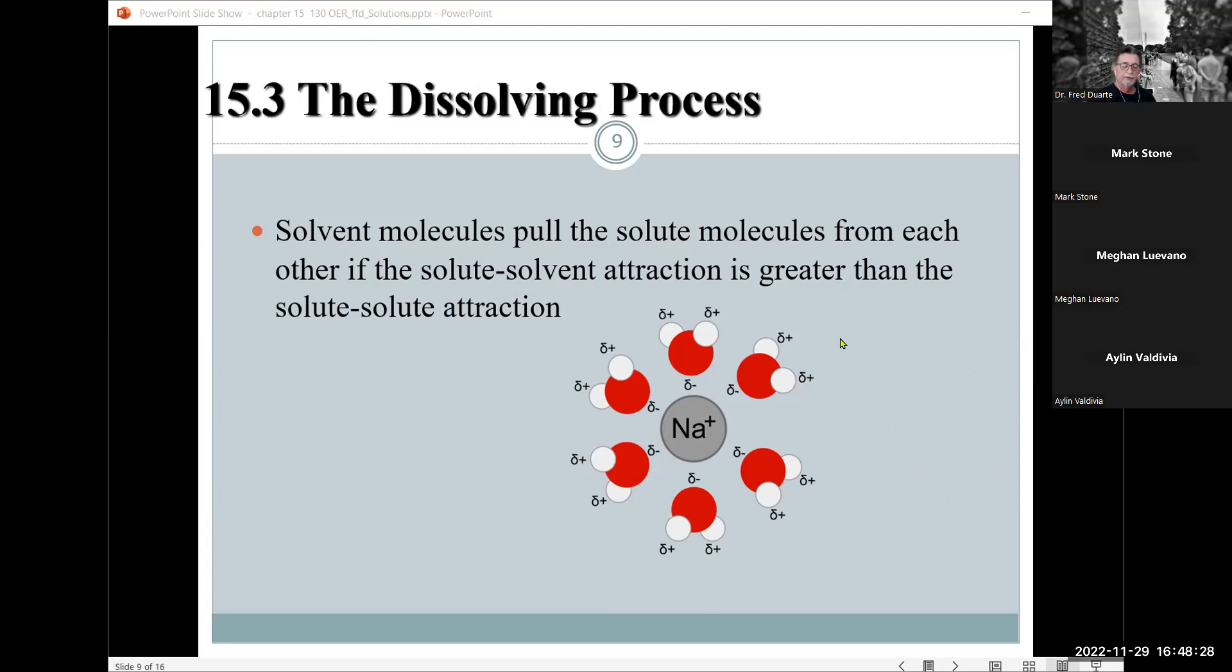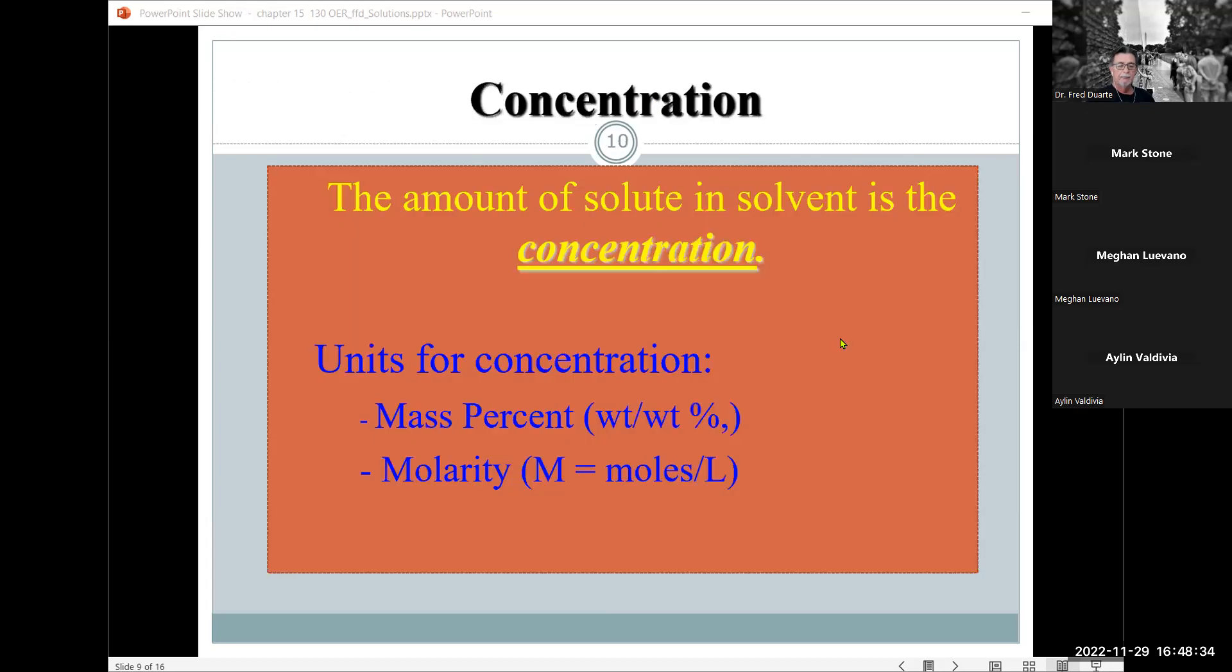That's no different than the ion-dipole intermolecular force we discussed last chapter. Okay. Well, with respect to concentration, well, there are two types of concentrations that we're going to work with. One is called the mass percent, which is a weight-weight ratio. So we've got the weight of the solute divided by the weight of the solution times a hundred. It gives us the weight percent.